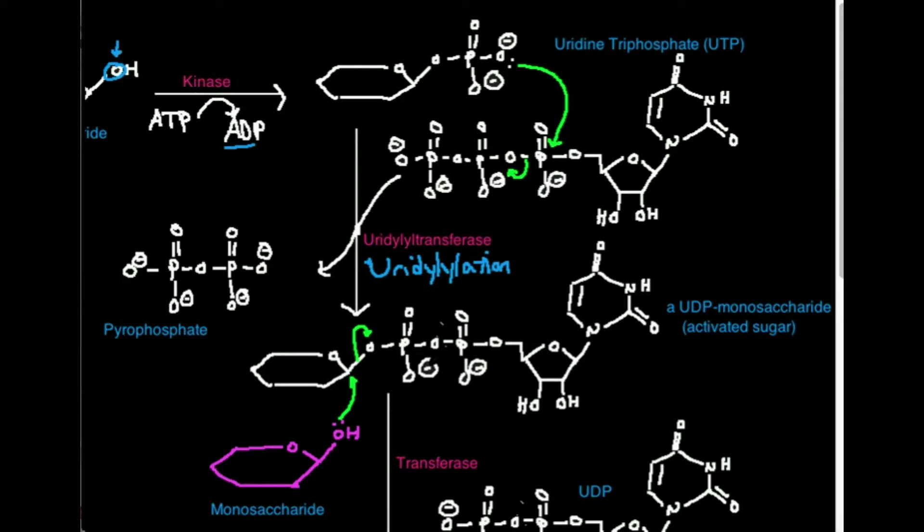What does uridylylation mean? It means we are transferring a molecule of UMP, which is uridine monophosphate. We're transferring one molecule of UMP onto some other molecule.